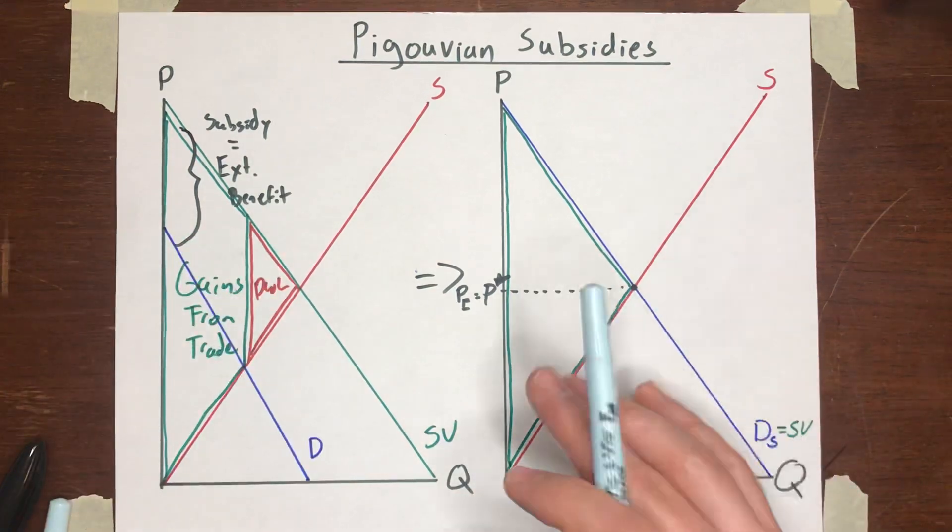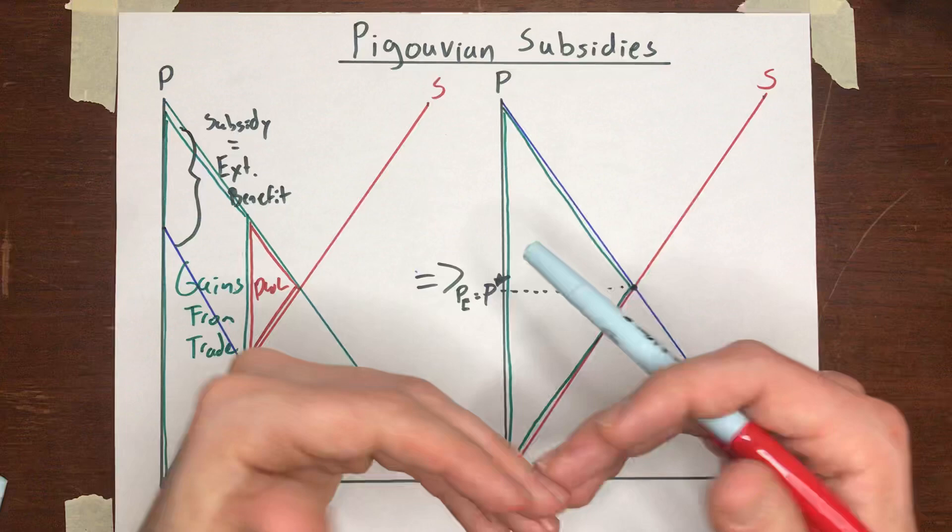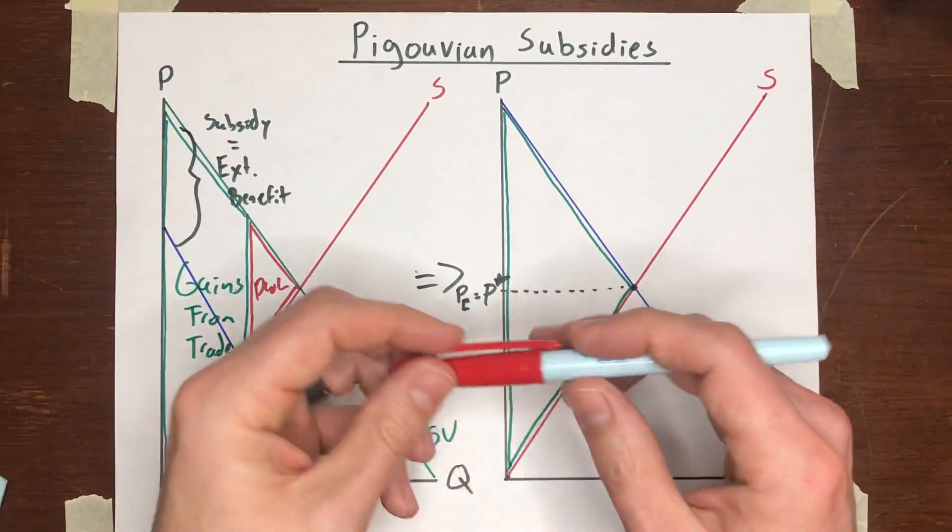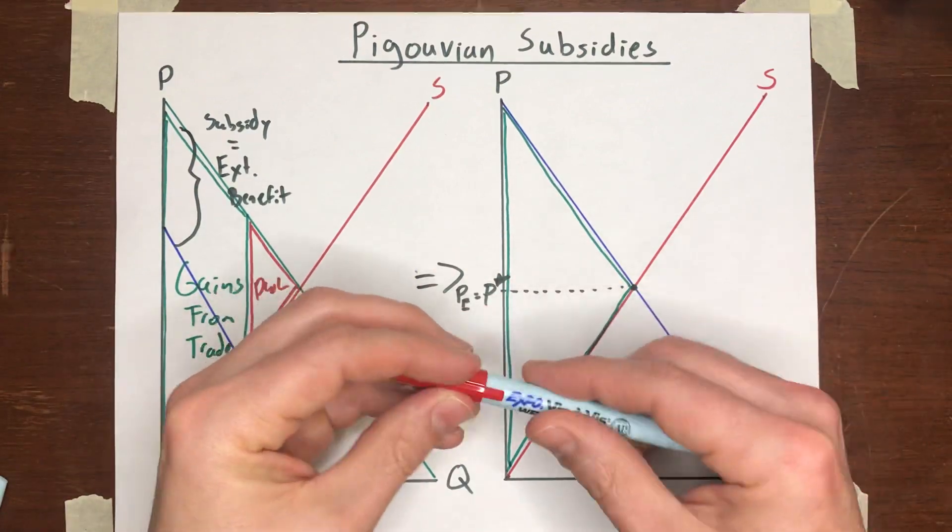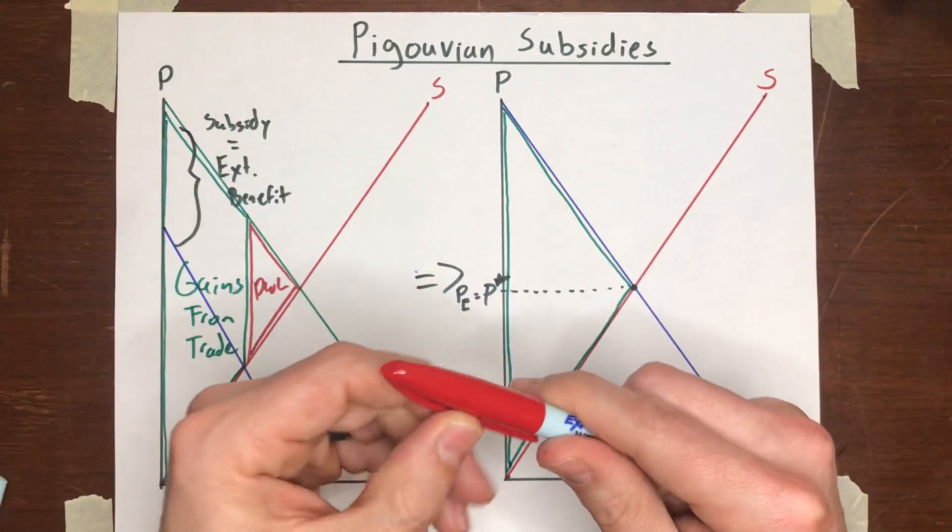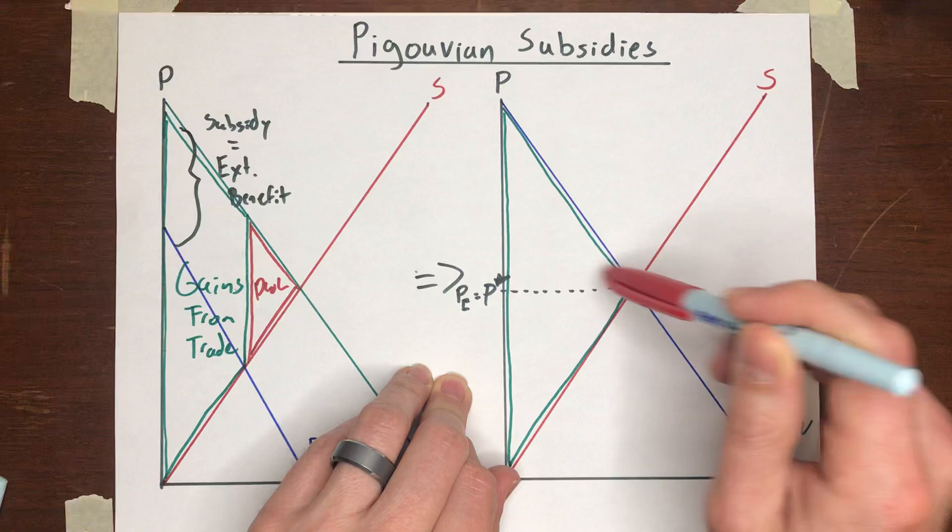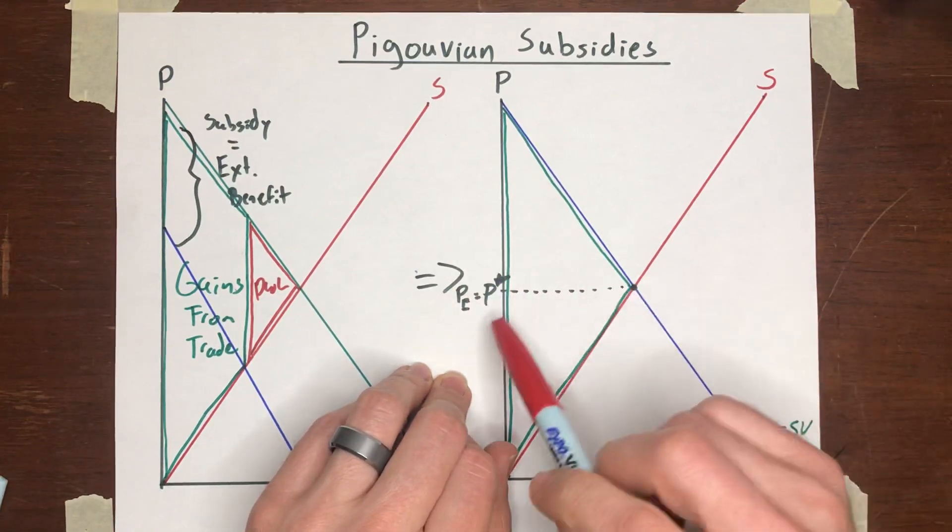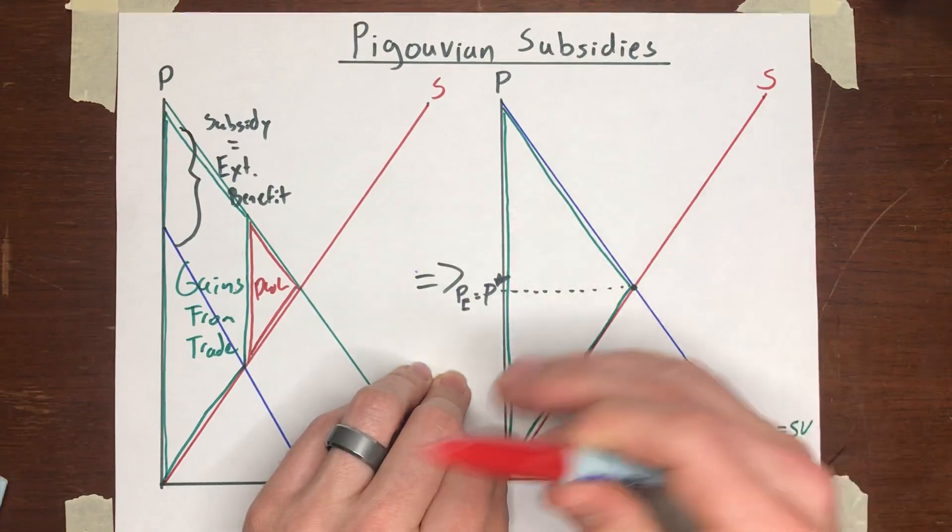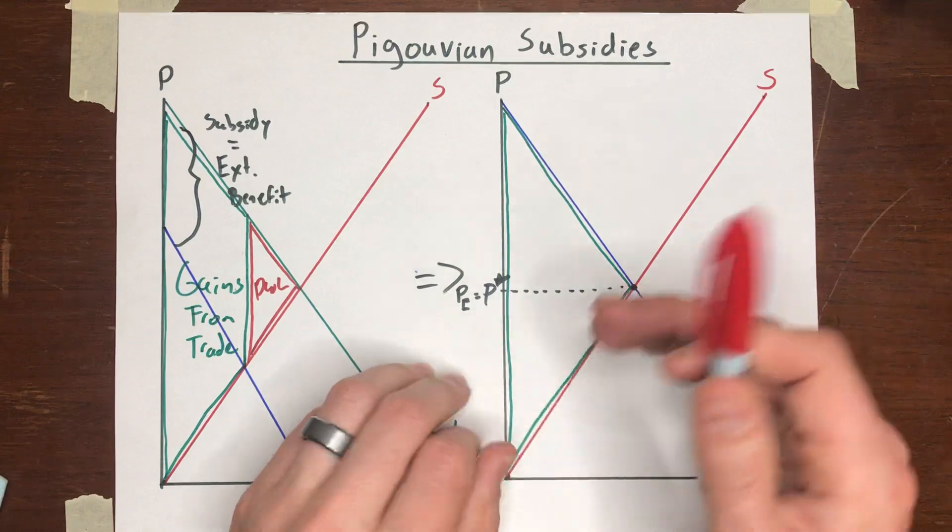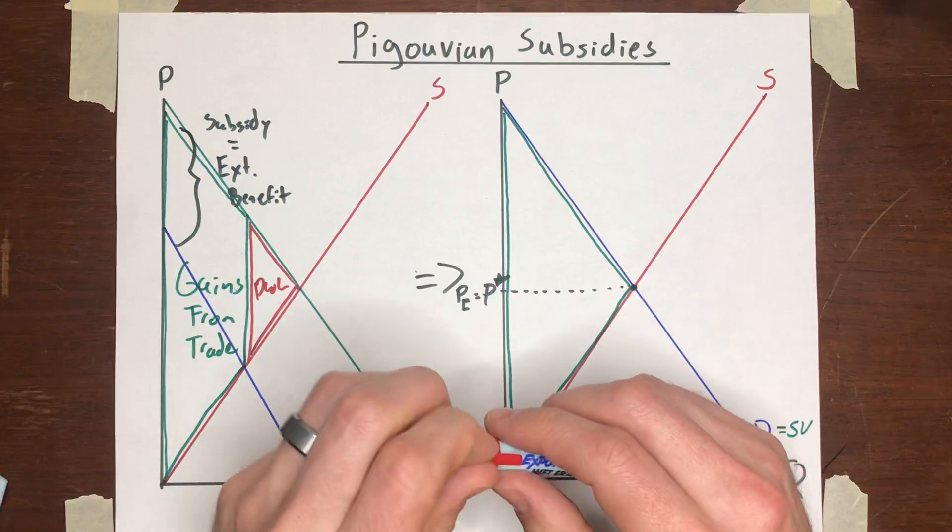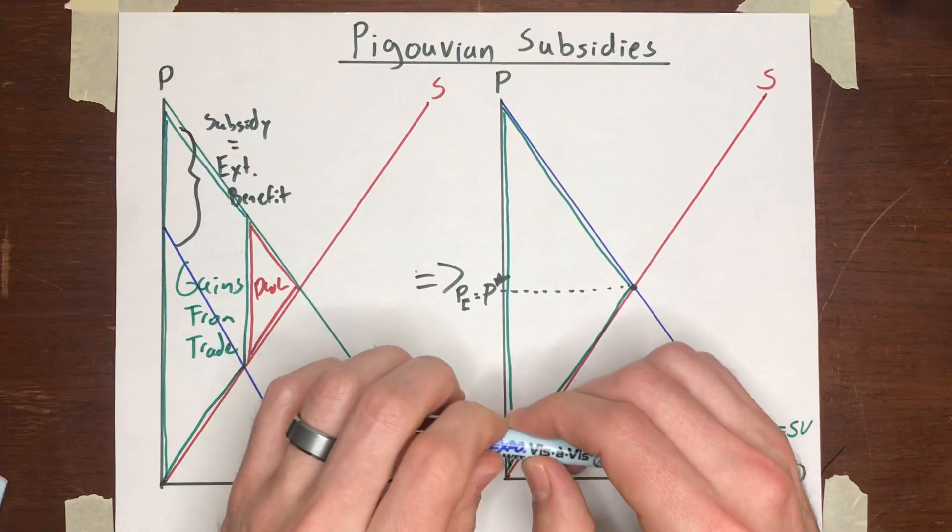Economists tend to really like Pigouvian taxes and subsidies because of their simplicity, because theoretically we can make markets perfectly efficient by using them. In the next couple of videos, we will talk about other methods of making the market more efficient. One is going to be command and control when the government basically uses regulation instead of taxes and subsidies to try to improve outcomes in the market. The other will be a case where the market sometimes can make itself perfectly efficient by people kind of making side deals with each other. That has to do with the Coase theorem and we'll talk about that in more detail shortly.